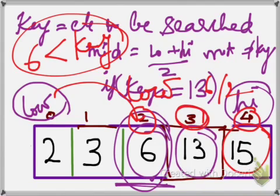Now, this is the mid and 13. In that case, mid will be equal to key. In this way, we search for an element using the binary search technique. Let me make it more clear.